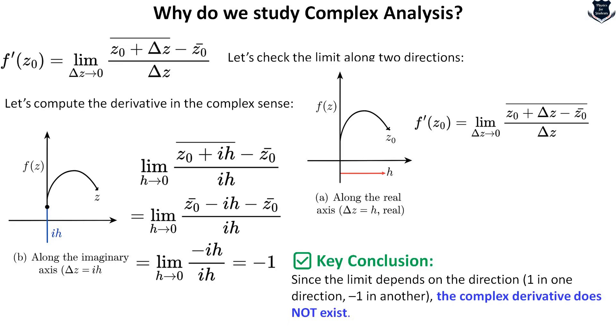The key conclusion is that since the limit depends on the direction, you can see 1 is in one direction and minus 1 is in another direction, the complex derivative does not exist. What do I mean by complex derivative does not exist? It means that when we say the complex derivative does not exist, we mean the function does not have a well-defined slope as we have seen in real numbers, because the limit depends on the direction we approach them. Even if two directions give different slopes, that is enough to say the derivative does not exist.